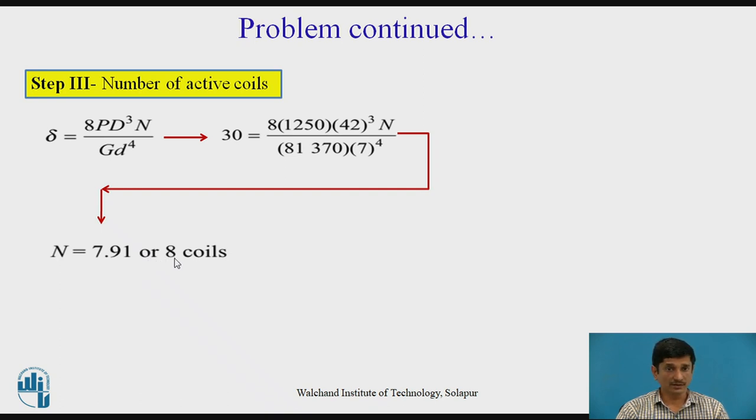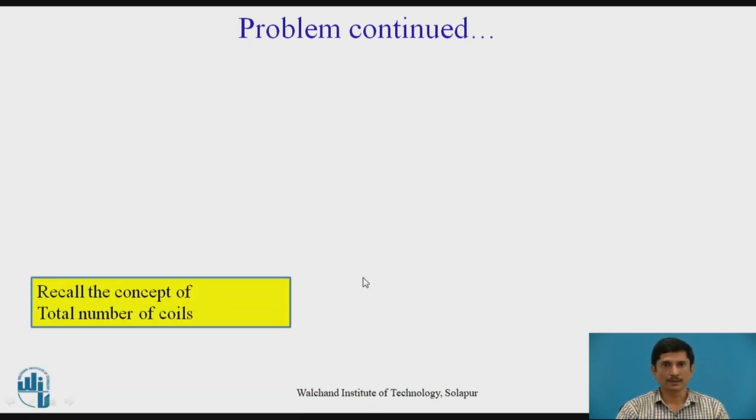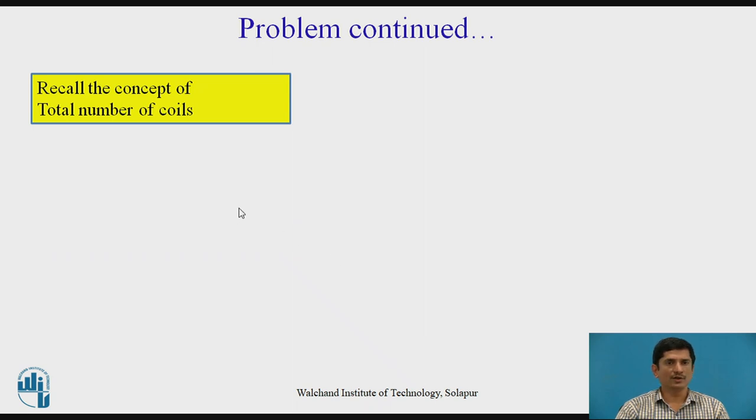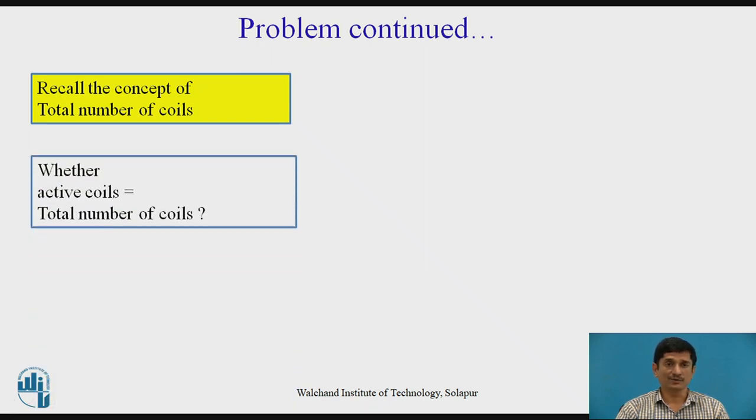We cannot use 7.91 as number of coils. We need to make it round figure. It is 8. We cannot make it 7. Now, with the help of this 8 coil, we need to proceed. Remember, these are active coils, which do take part in the deflection. You can please recall the concept of total number of coils. Total number of coils are given by some different equations. Whether active number of coils and total number of coils are equal, you can think upon this.